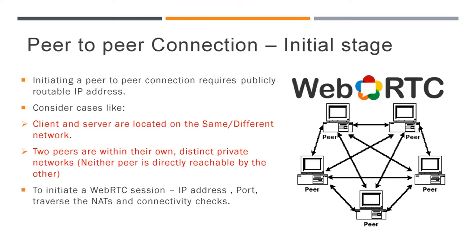In the last video we discussed GetUserMedia and RTC peer-connection APIs. Now you understand that the RTC peer-connection object is the core part of the WebRTC connection. We already discussed how users can connect to each other in WebRTC, but we did not discuss what initial problems can be faced. We know that initiating a peer-to-peer connection requires a public IP address. When peers are on the same network, it is easy to find their IP address with no delay. But when clients are on different networks with distinct private networks, there is a high chance the user is behind a firewall and NAT, making it very difficult to find user details for the WebRTC peer connection.